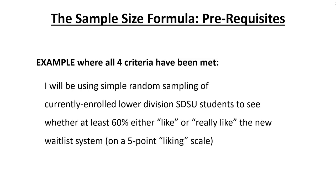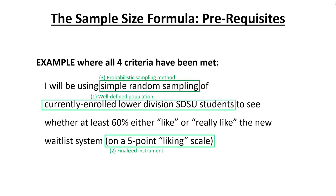Consider the following statement: 'I will be using simple random sampling of currently enrolled lower division SDSU students to see whether at least 60% either like or really like the new waitlist system on a five-point liking scale.' This statement contains all four prerequisites: a well-defined population, a finalized research instrument, a probabilistic sampling method, and an articulated type of analysis — calculating a percentage. With all four criteria present, we can proceed to determine the optimal sample size.